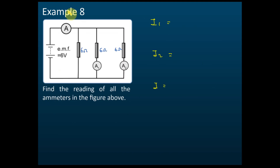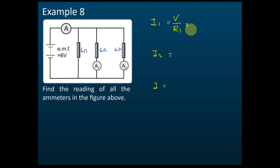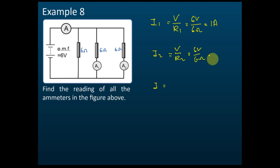Example 8: Find the readings of A1, A2, and A. A1 is the reading here, A2 is here, and A is here. I1 equals V over R1 — the voltage is 6 volts and R1 is 6 ohms, so this is 1 ampere. I2 is also V over R2 — 6 volts over 6 ohms — also 1 ampere.